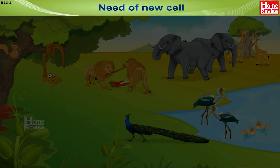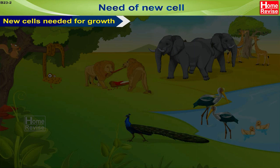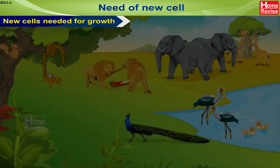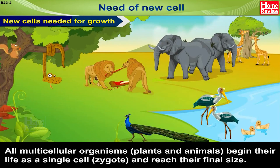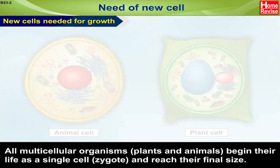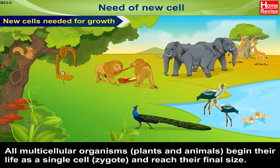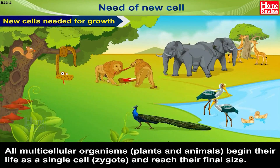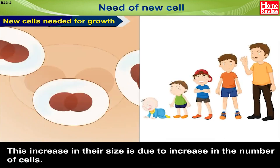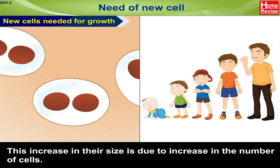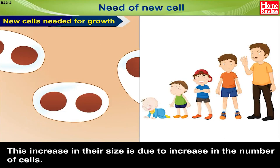Need of New Cells. First, new cells are needed for growth. All multicellular organisms, like plants and animals, begin their life as a single-cell zygote and reach their final size. This increase in their size is due to an increase in the number of cells.